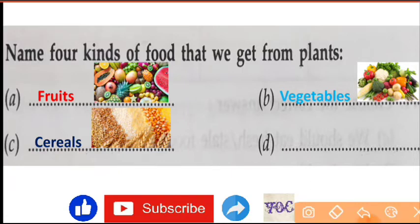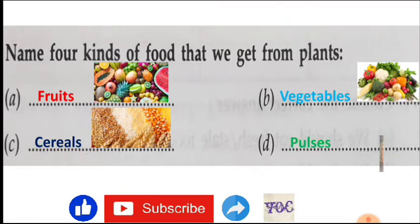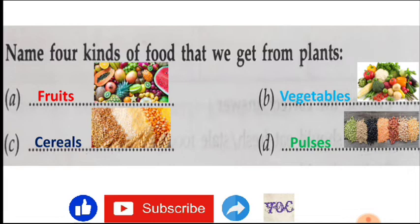Okay, cereals means you can say grains also. Grains: rice, wheat, maize, all that. You can see, cereals. Next that you can get from plants, that is, yes, pulses. Different types of pulses you can see that you use daily in your meal.